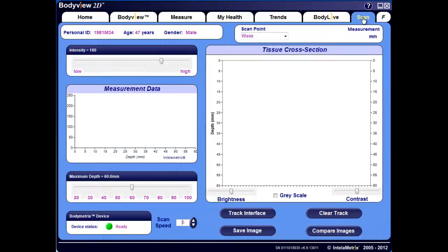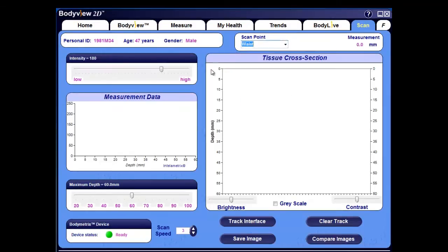Click on the scan tab, and from the scan point drop-down menu, select the waist. Next, adjust the intensity level to 160, as this helps reduce the number of white regions seen, which can be an indication of a saturated signal, especially on more sedentary or obese individuals.